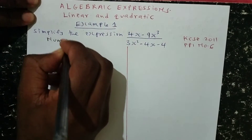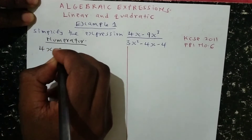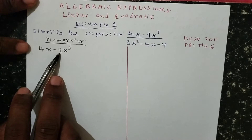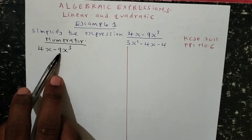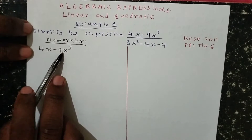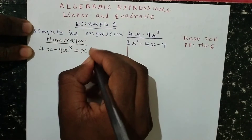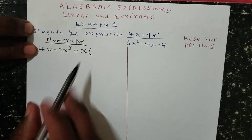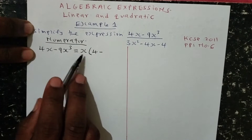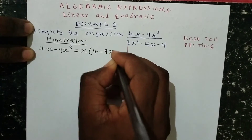The numerator has 4x minus 9x cubed. If you look at this particular expression, it cannot be solved directly unless we factor out the x, so that we can create a difference of two squares. So let me start by factoring out x, because it is common on both terms. If you take 4x divided by x, you obtain 4, and 9x cubed divided by x gives you 9x squared.